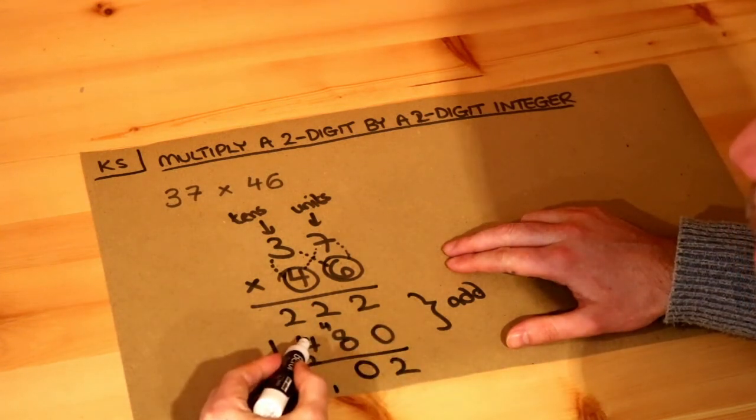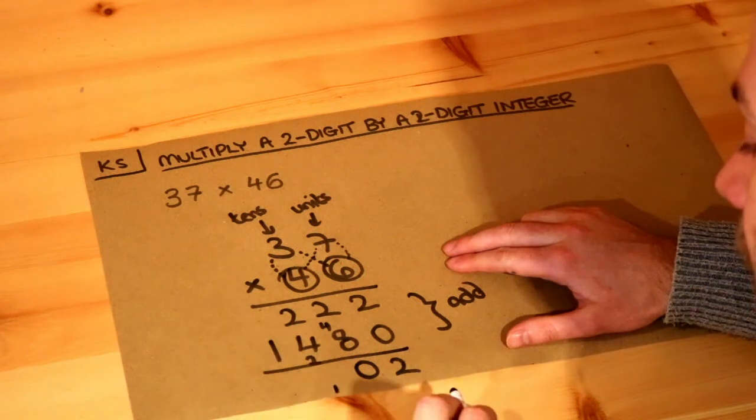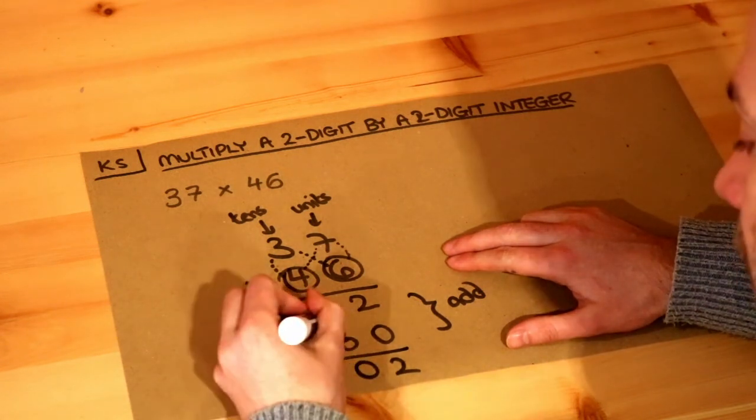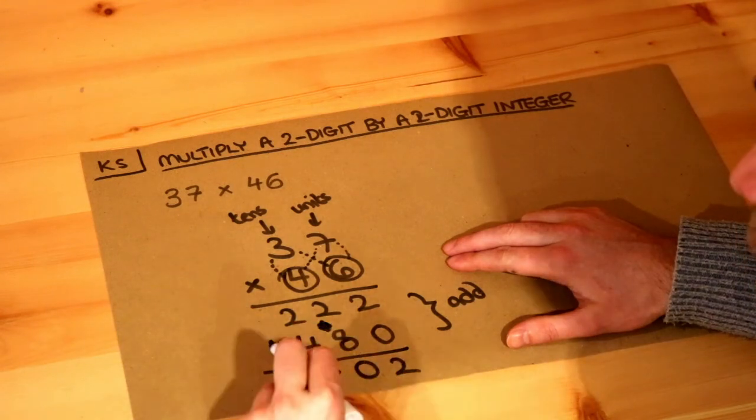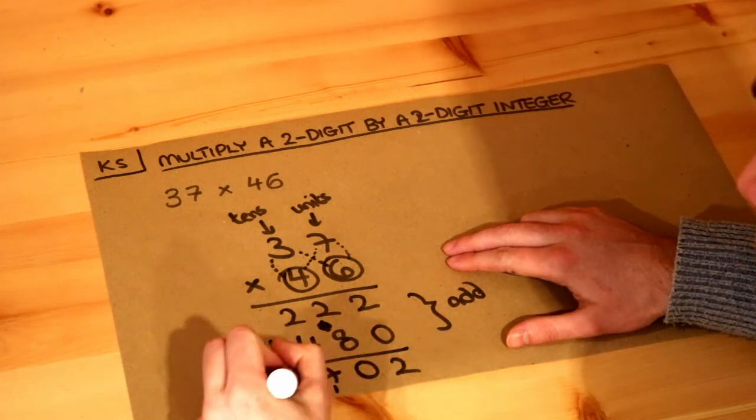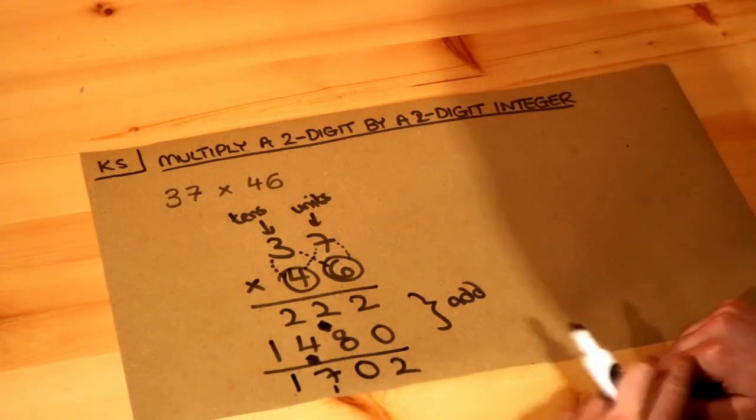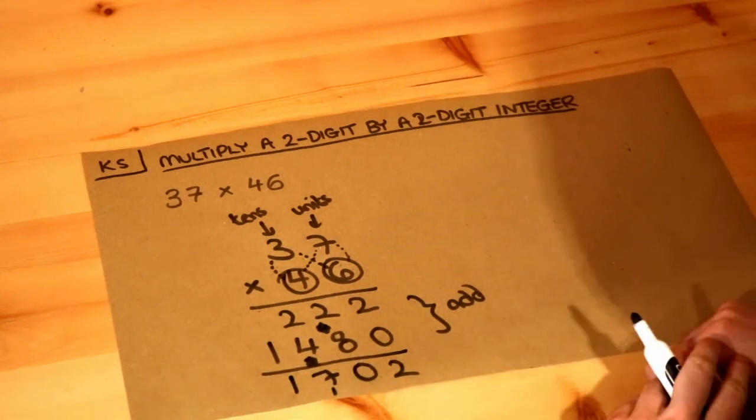We can ignore these numbers now, and finally we've just got 1 added to nothing, which gives us 1. In total, we've got 1702.